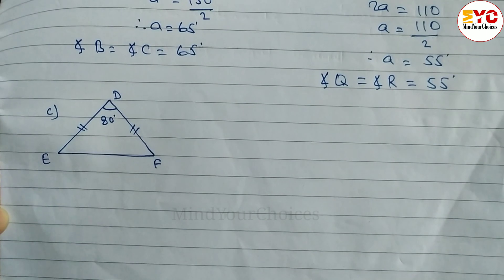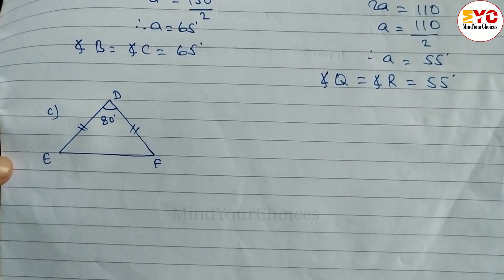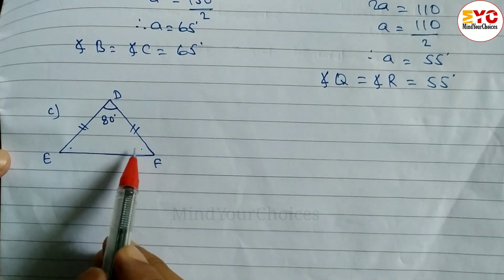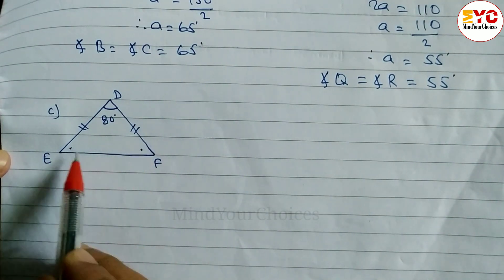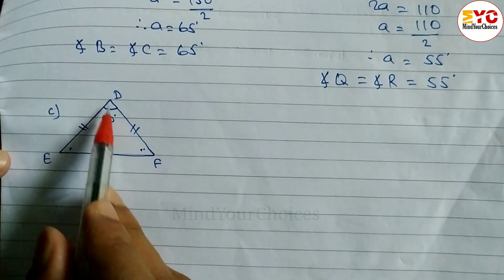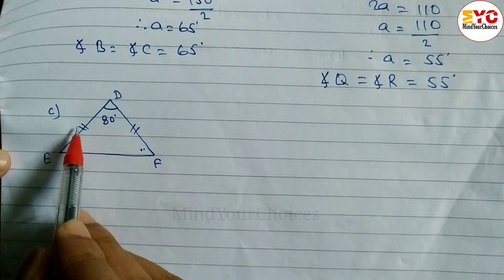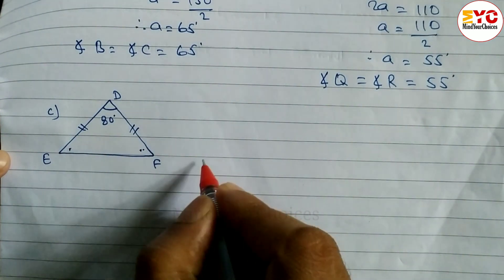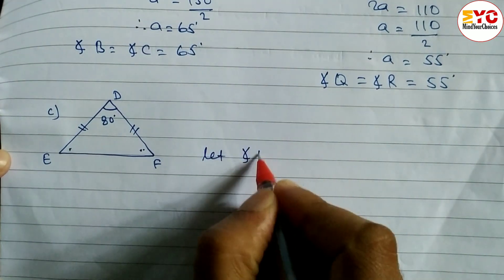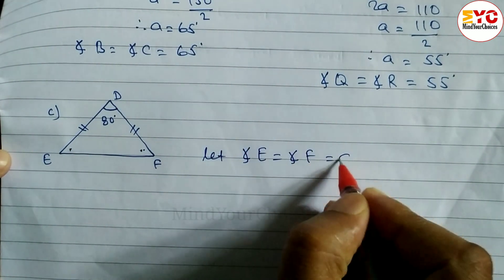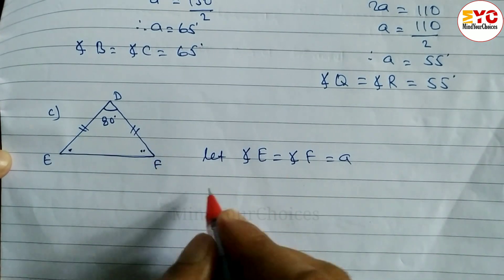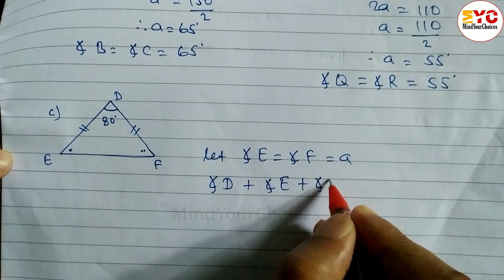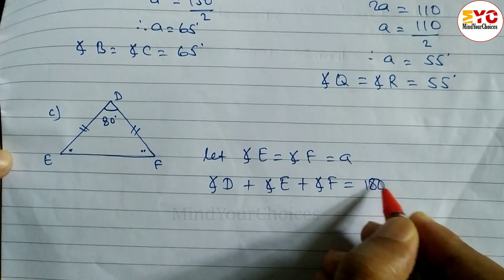Now look at question C. In the same process, we have to do part C. You can see the vertical angle is 80 degrees and we have to find out the base angle. Base means angle E and angle F, both are equal, because ED and DF are both equal. When two sides are equal, base angles are also equal. So we let angle E is equal to angle F is equal to A. Now, angle D plus angle E plus angle F is equal to 180 degrees.